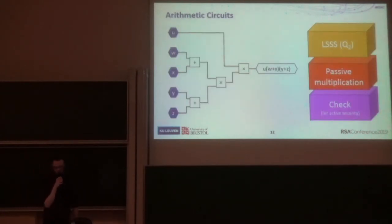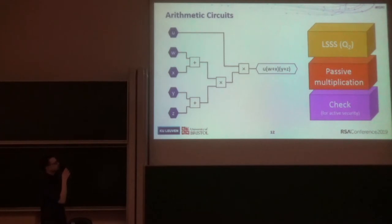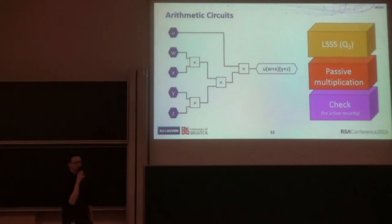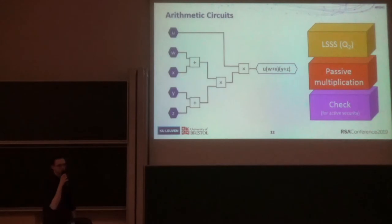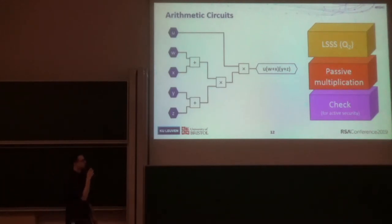We're going to look at an arithmetic circuit — just a sequence of additions and multiplications. We're going to enable computations of this form using a linear secret sharing scheme for a Q2 access structure specifically. We're then going to show a passive multiplication protocol, and then show how to perform a soundness check to get active security.